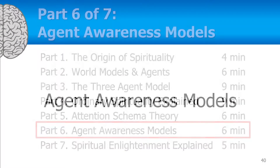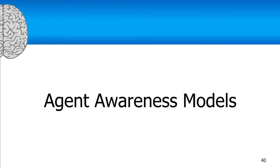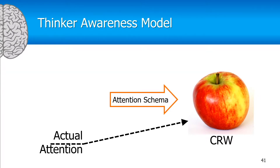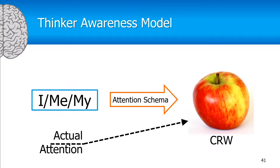I'm going to talk about agent awareness models, starting with the thinker. If there's an actual attention mechanism in the brain pointing to this apple here, that changes the current representation of the world to include a lot of extra information about that apple. At the same time, the attention schema is pointing to that apple from the self-model of the thinker — the I, me, my.